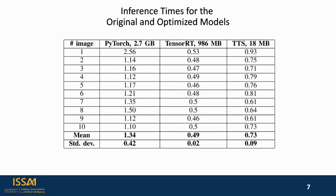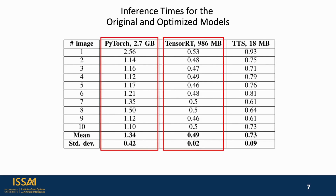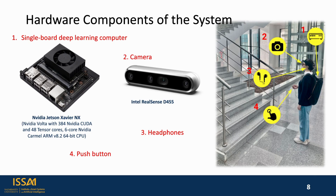Final inference times for the original and optimized models are summarized in the current table. We can see that inference time decreased by 2 to 3 times on average. The final assistive device consists of the following hardware components: NVIDIA Jetson Xavier NX was used as a single-board deep learning computer, Intel RealSense D455 was used as a camera, and a push button for capturing an image and headphones are required for the system to work.